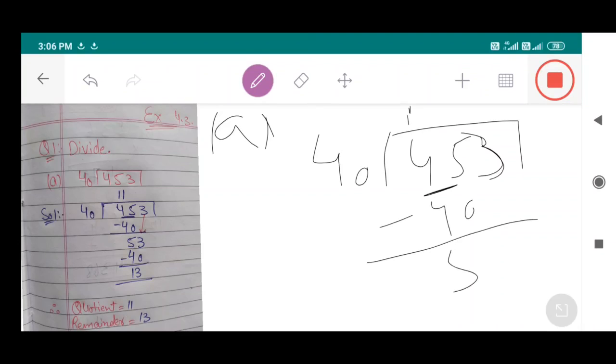45 minus 40 equals 5, and this 3 goes down. Now we have 53. 40 multiplied by 1 equals 40, so our remainder is 13. Therefore the quotient is 11 and the remainder is 13.